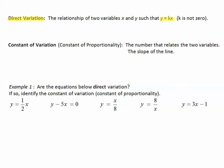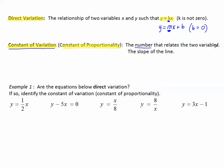The equation y equals kx is very much like y equals mx plus b, but notice the b is not there — or rather, the b is zero. k is in the same position as the slope, and that k is called the constant of variation, also known as the constant of proportionality, which is the number that relates the two variables.